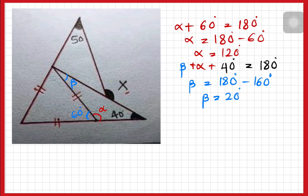This angle is 60 degrees and this angle is 20 degrees. How to find this angle? We can name the unknown angle delta. So delta plus beta plus 60 degrees forms a straight line.